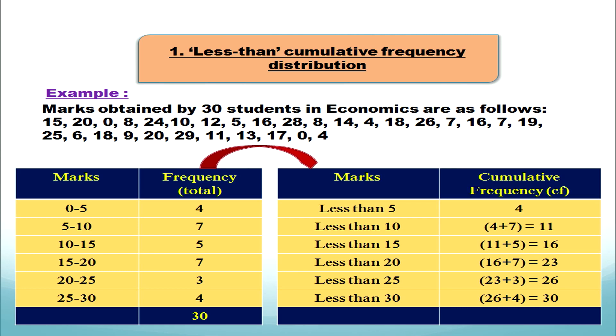We have our cross-check: the sum total of the frequency was 30 and in the cumulative frequency we also get 30 at the last class. This confirms the construction is correct. We must always verify that the last cumulative frequency equals the total frequency.